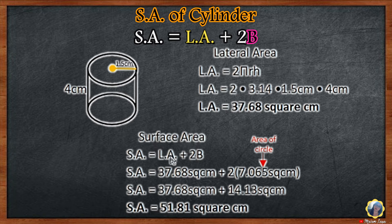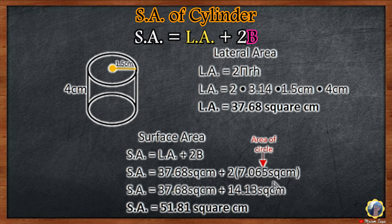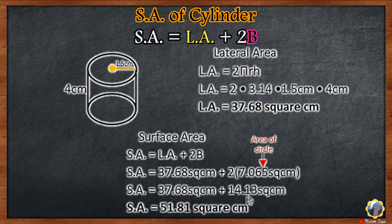Find the surface area of the cylinder: lateral area plus 2B. B is the area of the base, which is a circle. Formula: pi r squared. So 3.14 times 1.5 squared equals 7.065 square centimeters. We use 2B because there are two bases, top and bottom. So 2 times 7.065 equals 14.13 square centimeters. Then 37.68 plus 14.13 equals 51.81 square centimeters.